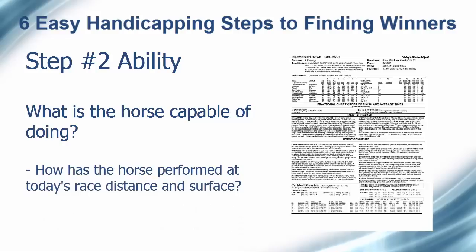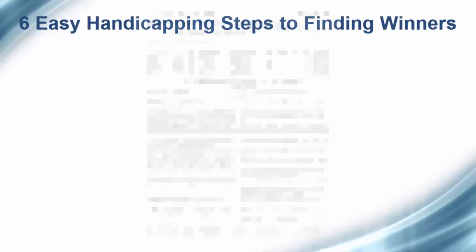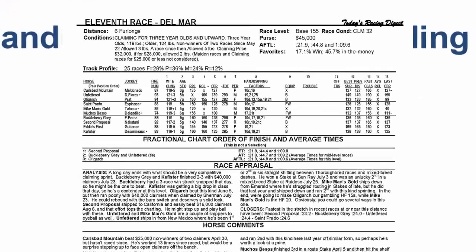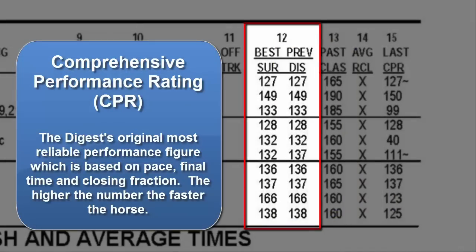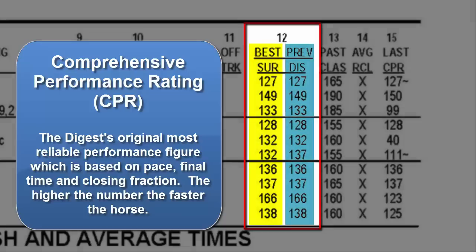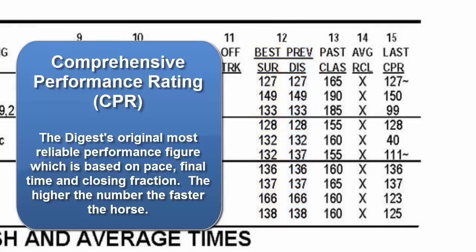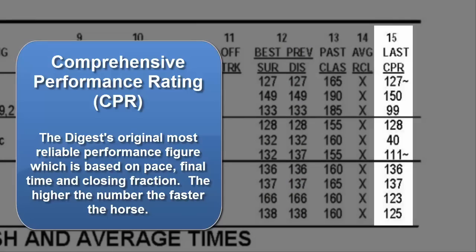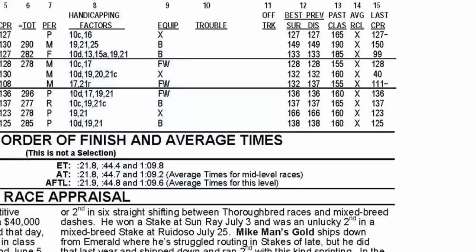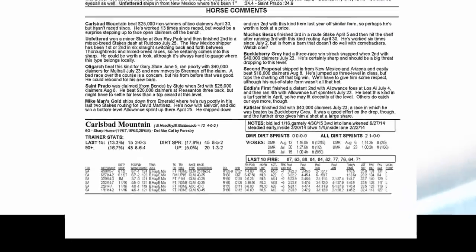To determine the best each horse has done at today's race distance and surface, look in the race sheet header in column 12, where you will find the best comprehensive performance rating the horse has earned for the surface and distance of today's race. To see how the horse performed in his last race, look in column 15. The higher the number, the faster the horse ran.